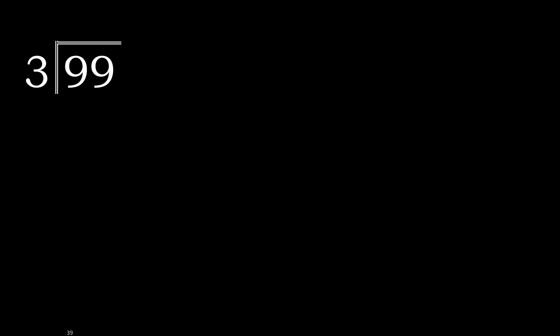99 divided by 3. First with 9. 9 is not less, therefore with 9. 3 multiplied by which number is nearest to 9, but not greater? 3 multiplied by 4 is 12, which is greater. Therefore 3 multiplied by 3 is 9.